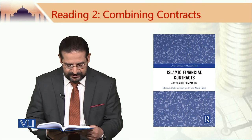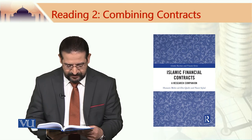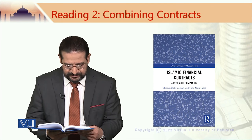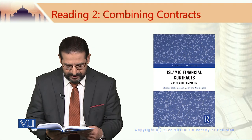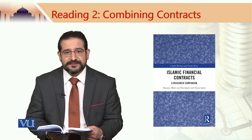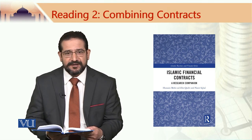In Islamic banks, Ijara Muntahiyah Bittamliq — lease culminating in the transfer of ownership to the lessee — the relationship between the parties throughout the lease period remains that of lessor and lessee, and the bank remains liable for the risks and expenses relating to ownership. Transferring ownership risk to the lessee during the lease period would render the transaction void. However, one of the parties can undertake a unilateral promise to sell, buy, or gift the asset at the termination of the lease period. This will not be binding on the other party. I think this is a very good read and self-explanatory.